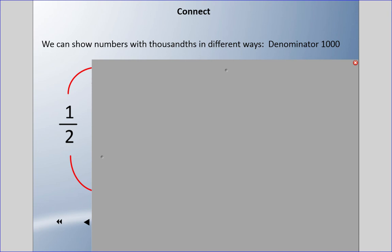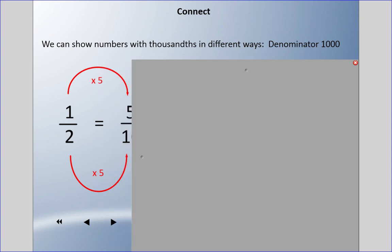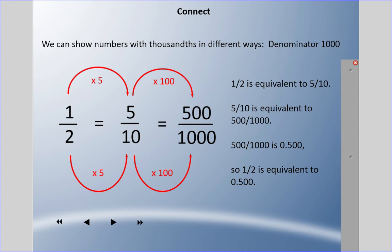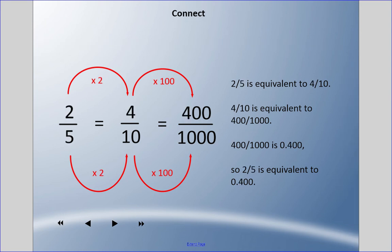I'm going to slowly reveal what's going on here with one half, working toward a denominator of a thousand. I multiply the numerator and denominator by five to get a denominator of ten — that gives five tenths. Then I multiply by a hundred to get five hundred thousandths. So one half is equivalent to five tenths, which is equivalent to five hundred thousandths, written as 0.500.